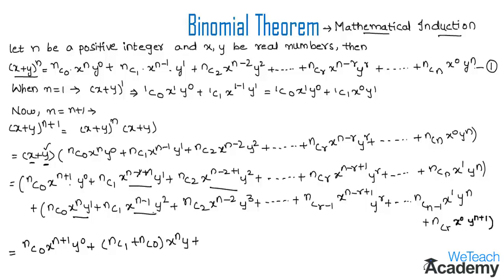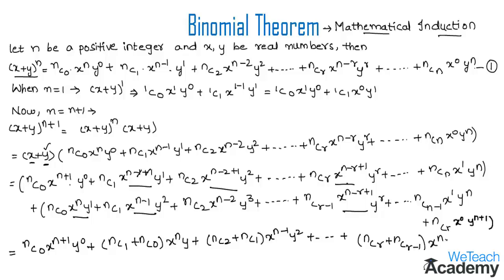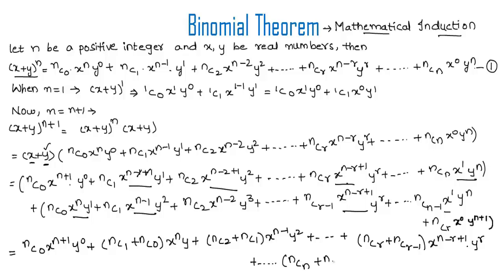Taking common factors: (nC1 + nC0) · x^n · y; then (nC2 + nC1) · x^(n-1) · y^2; then (nCr + nC(r-1)) · x^(n-r+1) · y^r; then (nCn + nC(n-1)) · x · y^n; and finally nCn · x^0 · y^(n+1).